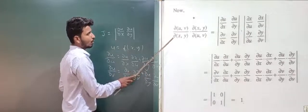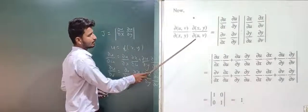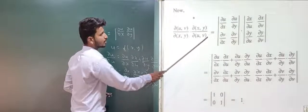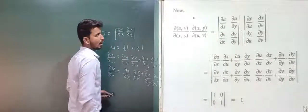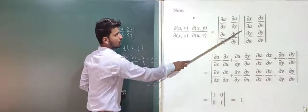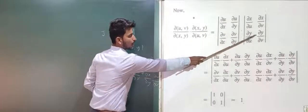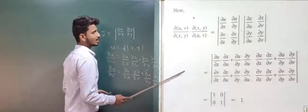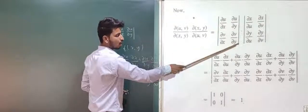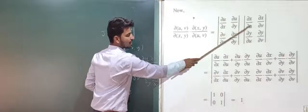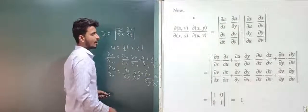Now we consider the LHS: ∂(u,v)/∂(x,y) × ∂(x,y)/∂(u,v). This can be written in determinant form as the product of two 2×2 determinants: first determinant has entries ∂u/∂x, ∂u/∂y, ∂v/∂x, ∂v/∂y; and second determinant has entries ∂x/∂u, ∂x/∂v, ∂y/∂u, ∂y/∂v.